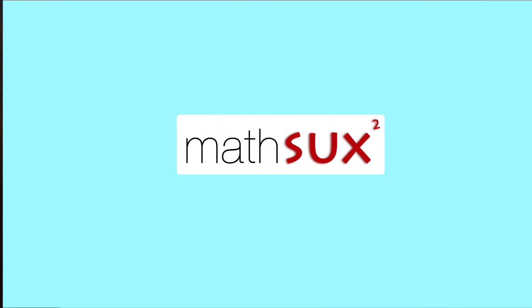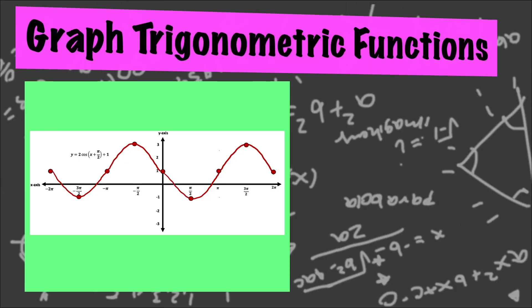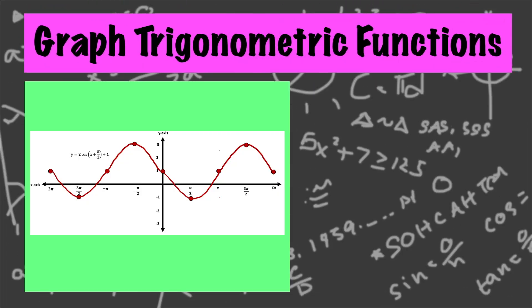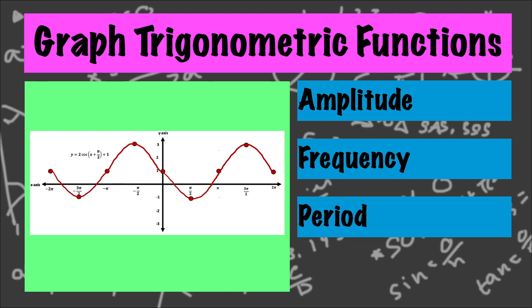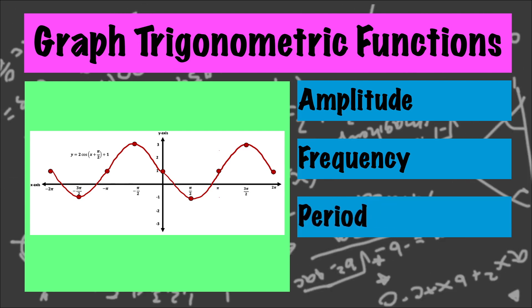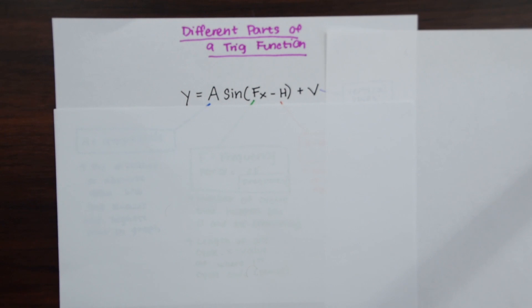Hi everyone, and welcome to Math Sucks. This video is going to help you pass Algebra 2 Trig. We're going to go over how to graph trigonometric functions by identifying the amplitude, frequency, period, and horizontal and vertical phase shifts. If you need a review on how to derive trig functions like y equals sine of x, cosine of x, or tan of x, I have a video on that — I'll post it in the description and up on the right. Please check that out if you haven't done that yet.